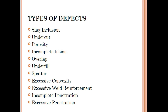Now coming to the main topic — SMAW welding defects. These include slag inclusion, undercut, porosity, incomplete fusion, overlap, underfill, spatter, excessive convexity, excessive weld reinforcement, incomplete penetration, and excessive penetration. All these defects have their own limitations as per every code and standard. For example, ASME Section 8 Division 1 has specific requirements, and every code has different requirements depending on the industry.